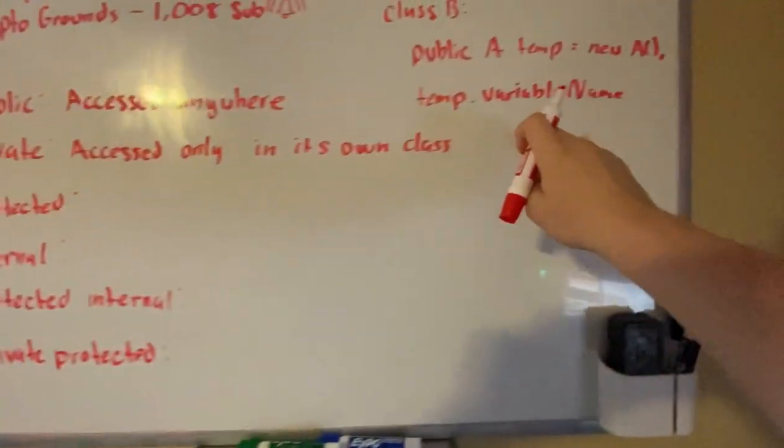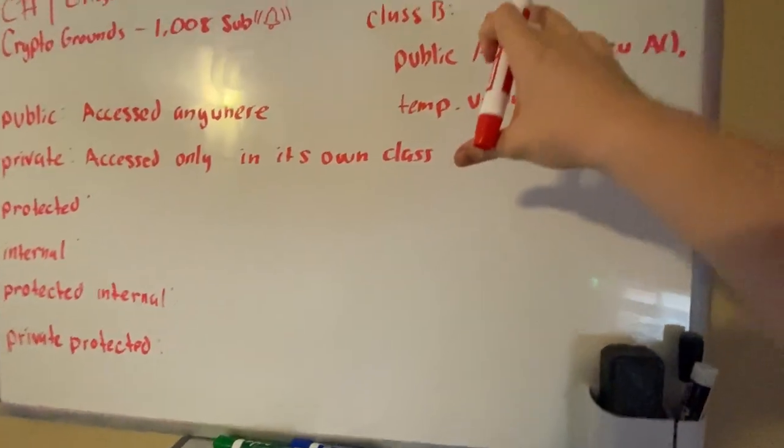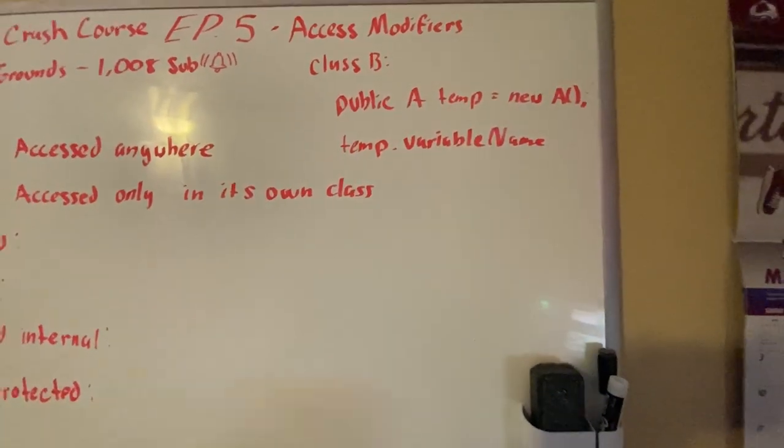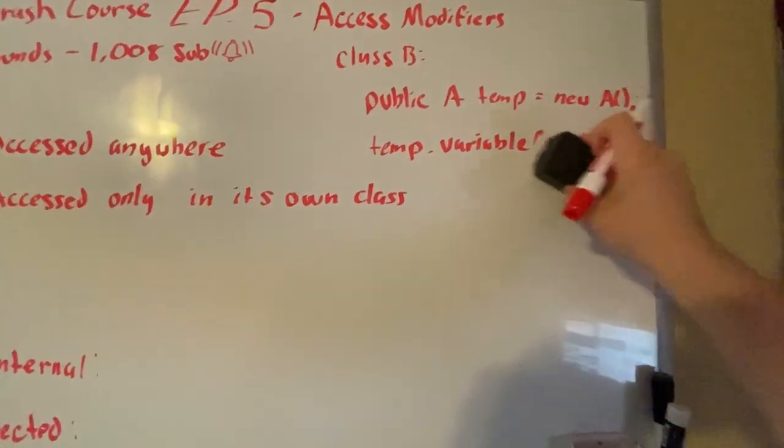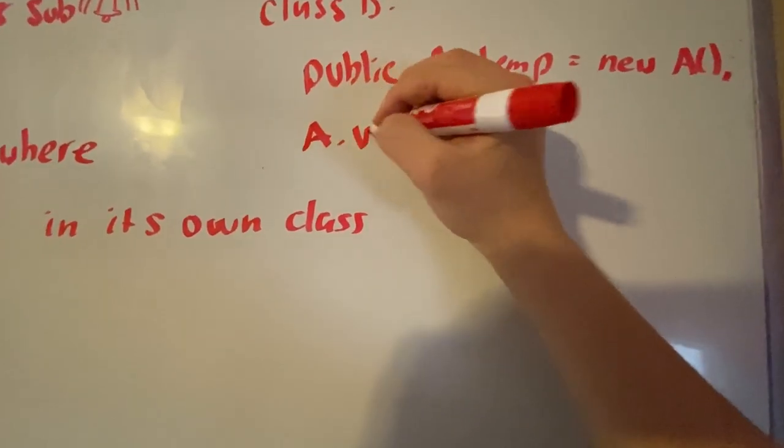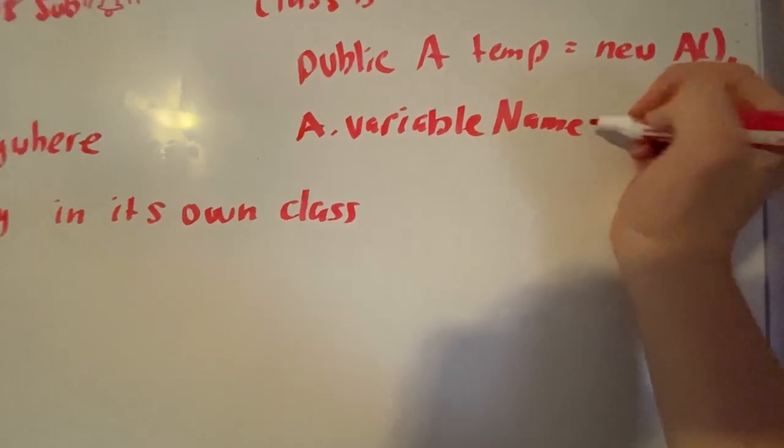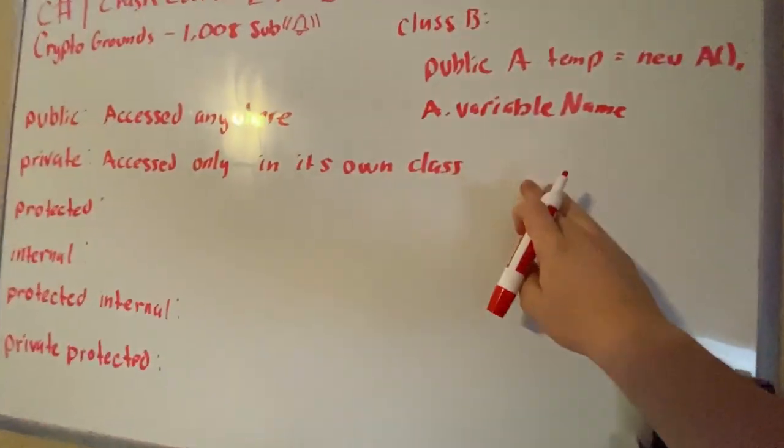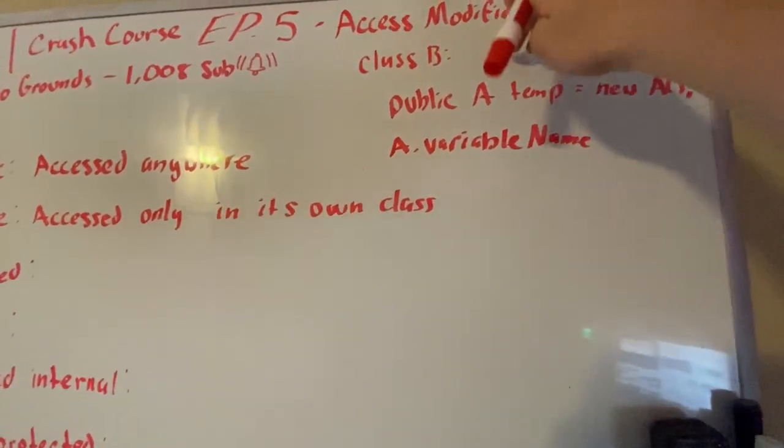However, that must be derived. So pretty much before I actually continue, we can literally use all of these in another class as long as in our project. Public you could literally do A dot variable name too. The issue with this is that if you have a class such as like a template which you're using a class as like a blueprint.